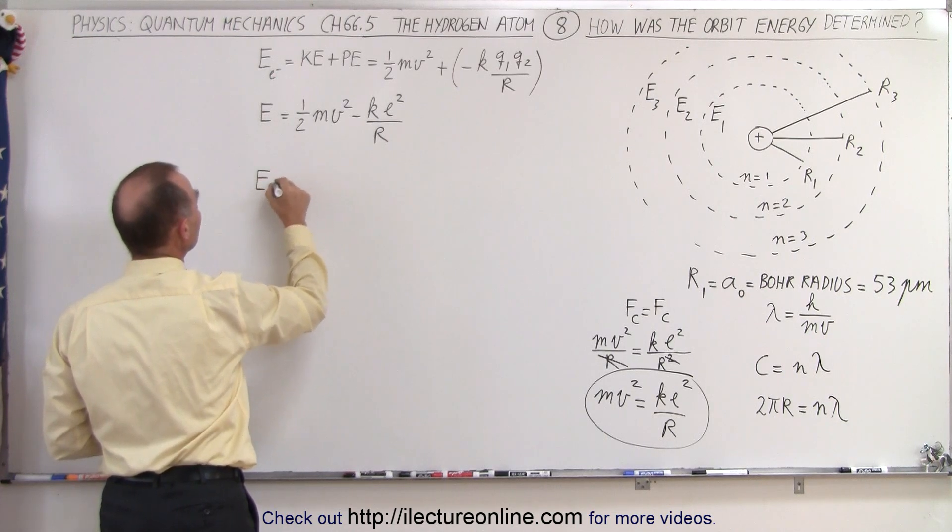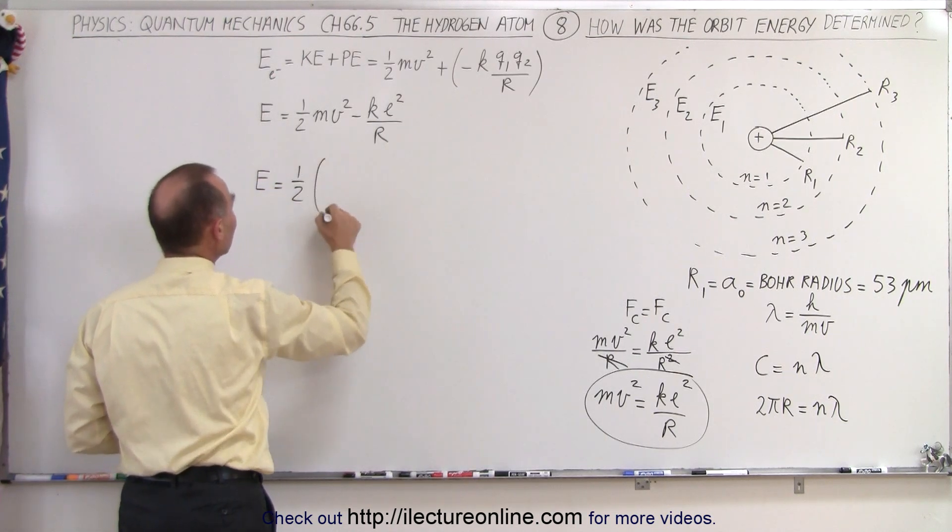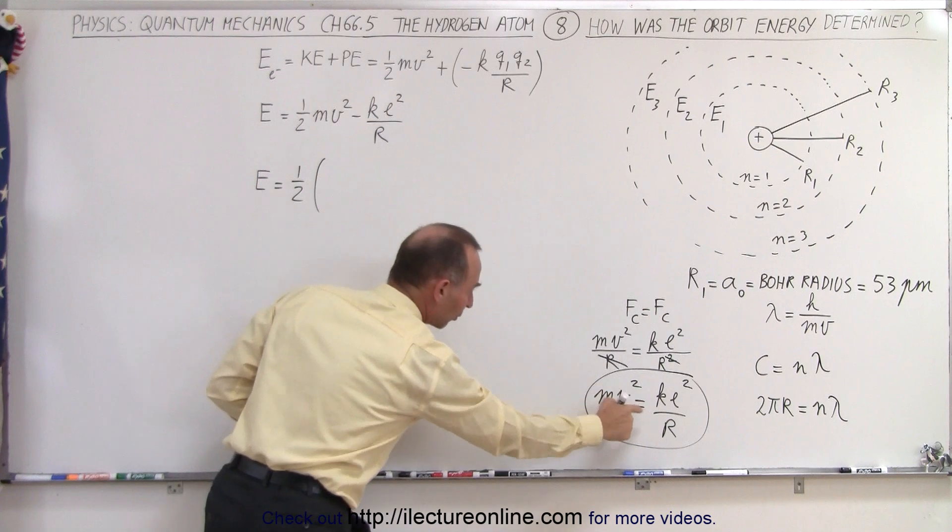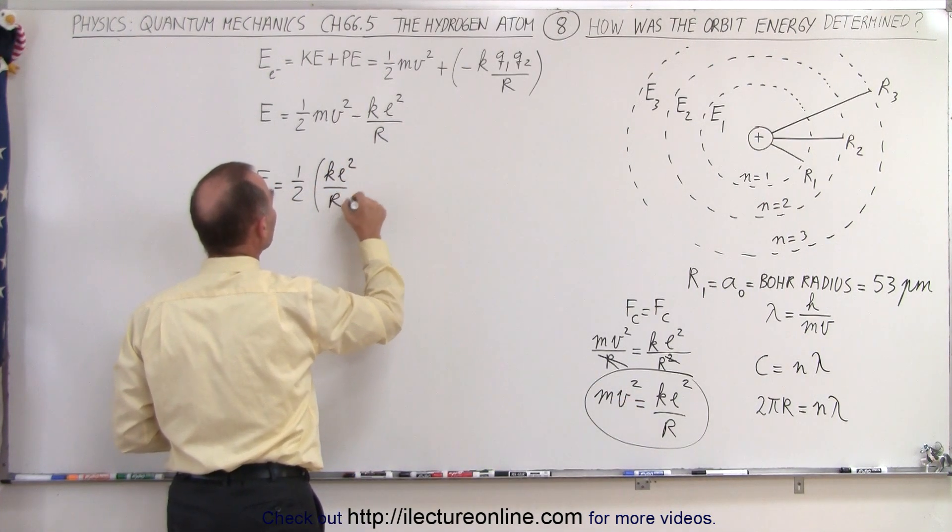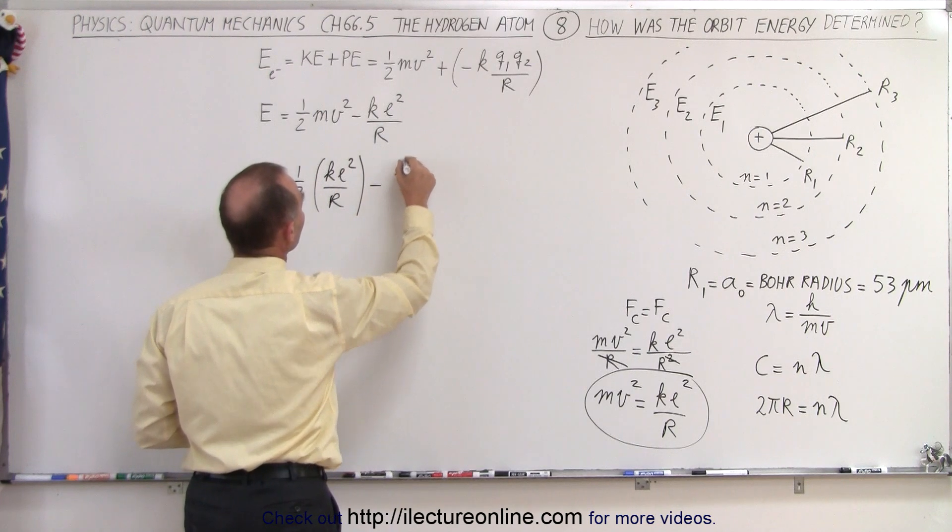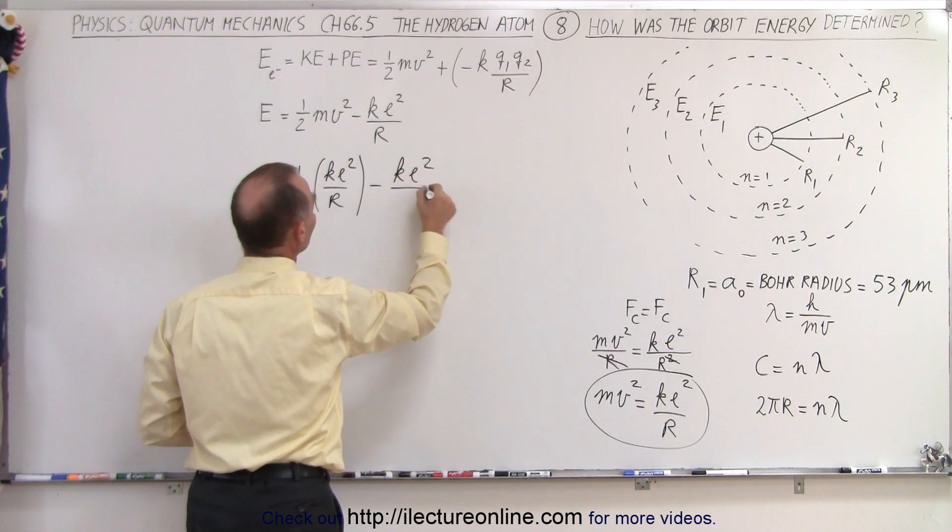So that means that mv² has to be equal to ke² divided by r. Now let's go ahead and take this and plug that back into our energy equation right here.